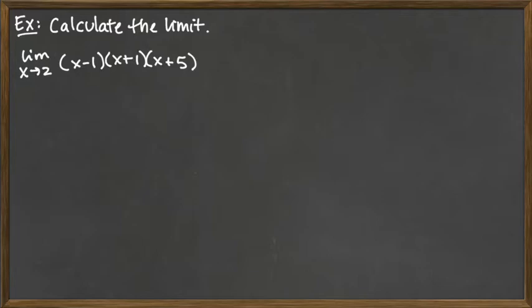Polynomials are nice continuous functions and for continuous functions we can simply calculate limits by plugging in the value given. And so we don't need to multiply it out, we can just go ahead and plug directly in.